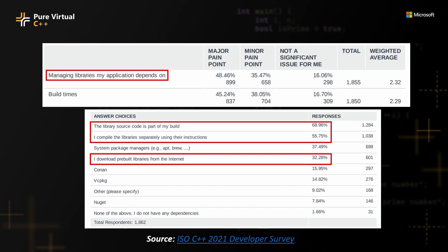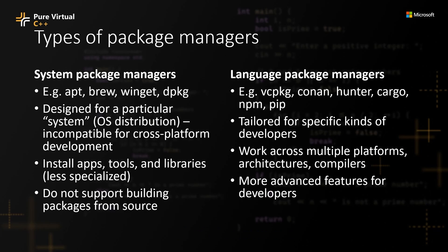Furthermore, when we look at how developers get their libraries working, it looks like most of them do so manually. This may be done using Git submodules, manually following build instructions for individual libraries on their GitHub pages, searching for pre-built binaries online, and other methods. I am here to tell you that it doesn't have to be this hard. You should start using a package manager.